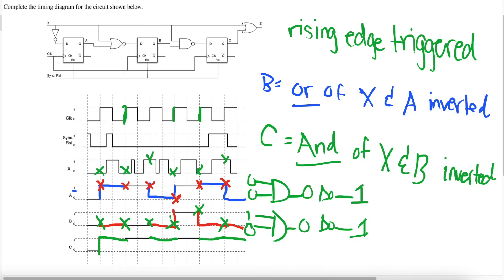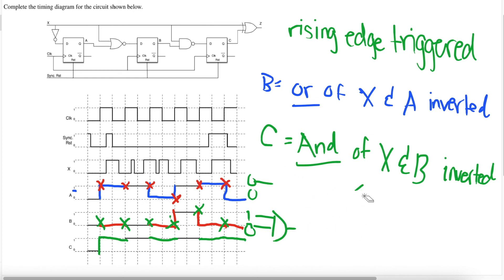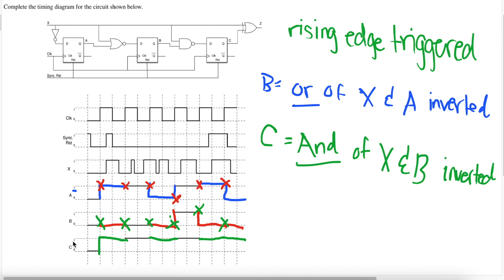Now if we erase all the work, this is what your final diagram should look like. I hope this made sense drawing this flip-flop circuit timing diagram. As you can see, it actually was not that hard when you know what you're doing and create the proper equations to know what you're looking for. We have our X line, which is given to us, and our A, B, and C. The synchronous reset is usually there in most flip-flop timing diagram circuits but is mostly irrelevant for rising edge and lower edge triggered circuits. Make sure to look for whether there's a rising edge or lower edge.